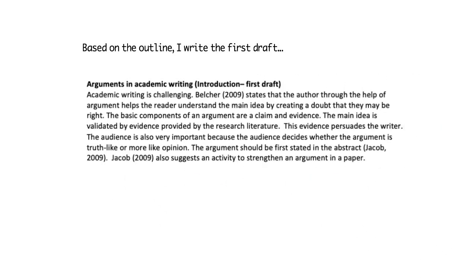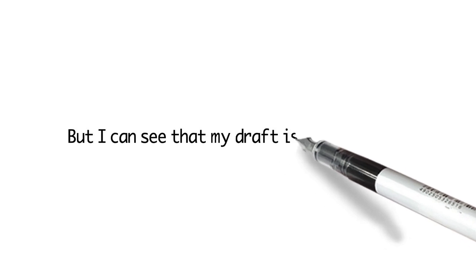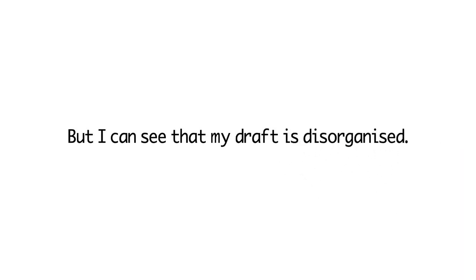Based on this outline I write the first draft, and it goes like this: 'Academic writing is challenging. Belcher states that the author, through the help of argument, helps the reader understand the main idea by creating a doubt that they may be right. The basic components of an argument are a claim and evidence. The main idea is validated by evidence provided by the research literature. This evidence persuades the writer. The audience is also very important because the audience decides whether the argument is truth-like or more opinion-like. The argument should be first stated in the abstract. Jacob also suggests an activity to strengthen an argument of a paper.' I can see immediately by reading it that this is a little bit confused.